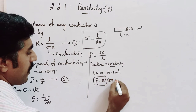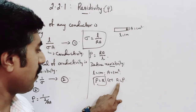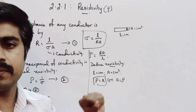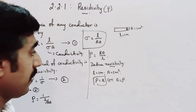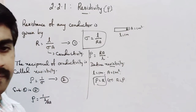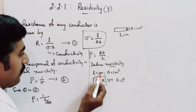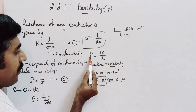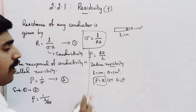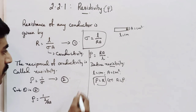We can write R equals rho, meaning the resistance of a conductor equals the resistivity of the same conductor when the conductor has a length of one meter and an area of cross section of one meter square. Resistivity of a material or conductor is defined as the resistance offered to the current flow by the conductor.